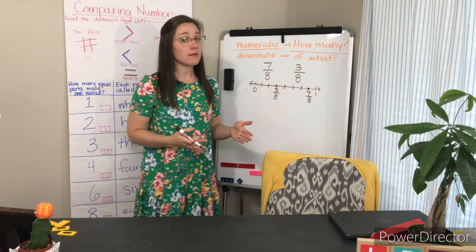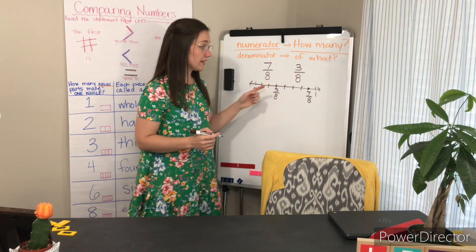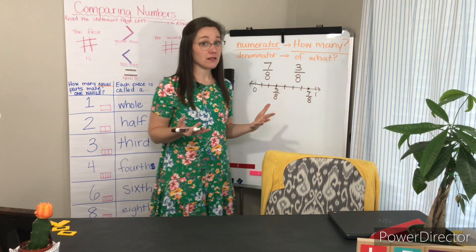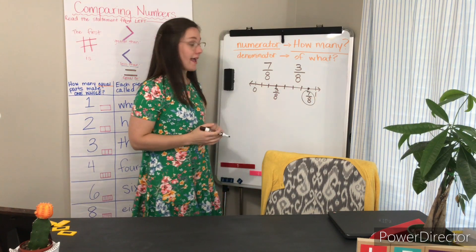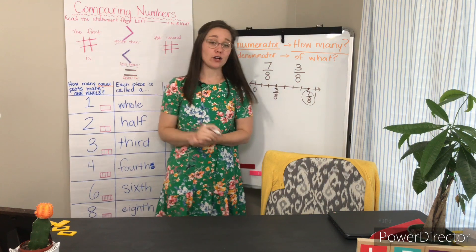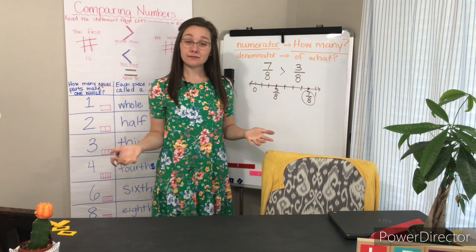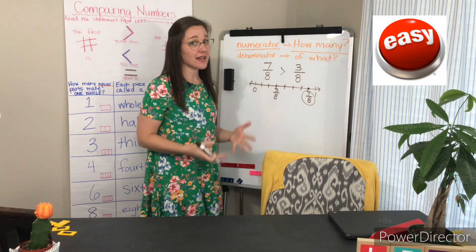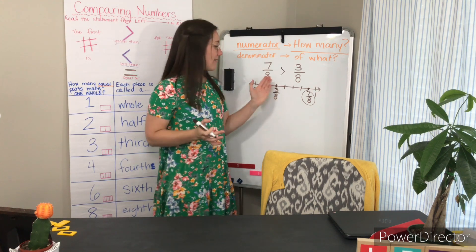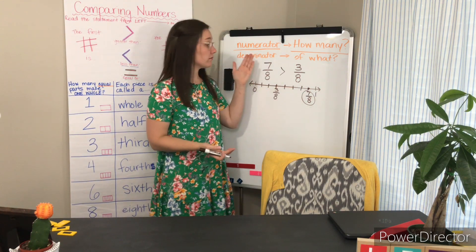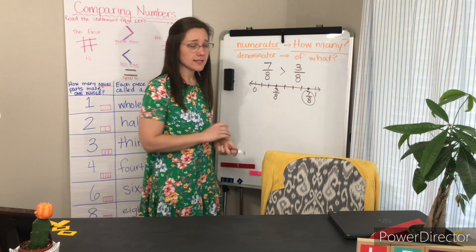Just like any other number line, our numbers get bigger as we go to the right. The number that is farthest along the number line is going to be our largest number. So seven-eighths is greater than three-eighths. Seven-eighths is greater than three-eighths. It's apples to apples — we're comparing the same unit. We have eighths here and eighths here. So which is going to be more? Seven of them or three of them? Seven of them is going to be more.